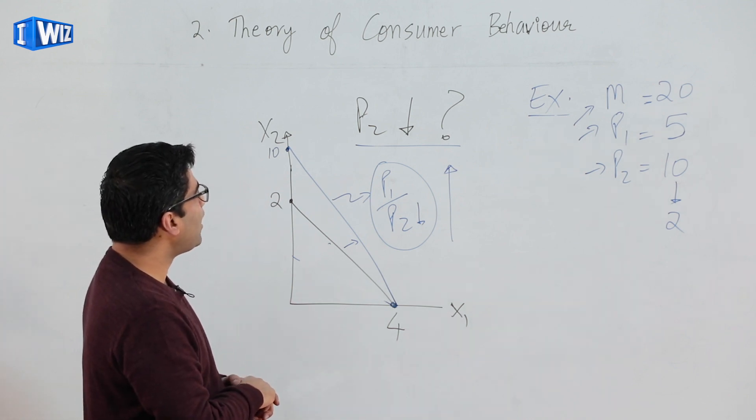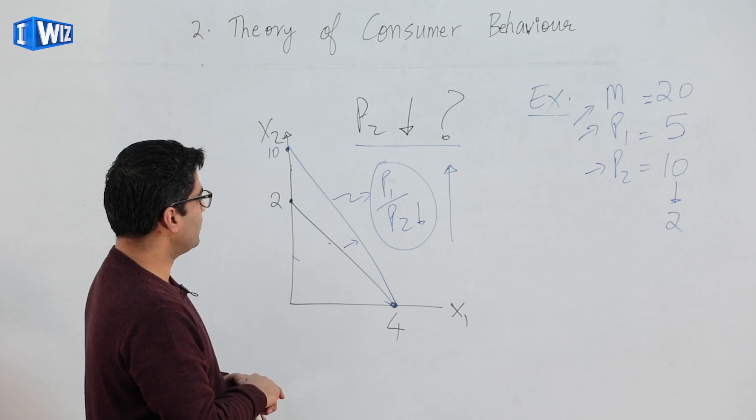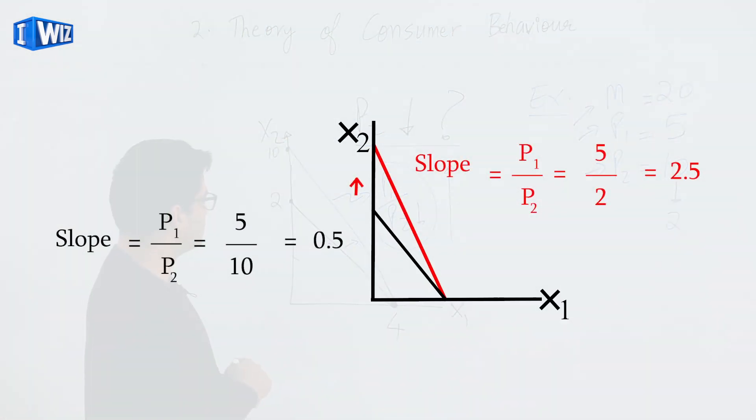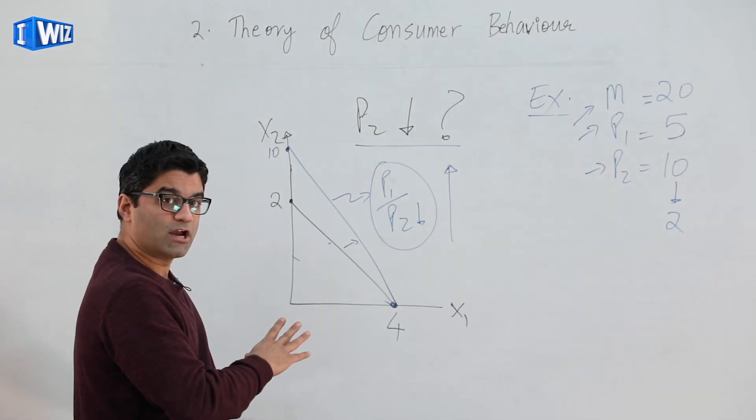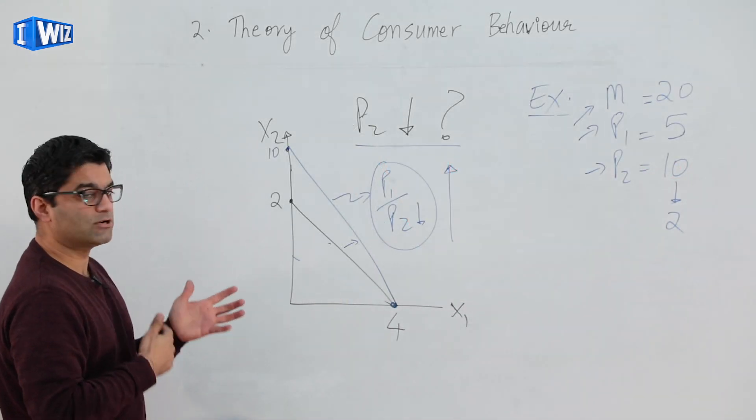That's just to get an idea of how the slope changes when relative prices change, which is very important. All right, so that's going to conclude this part of chapter two, which is looking at the budget side of consumers.